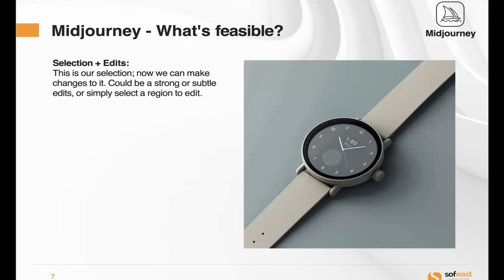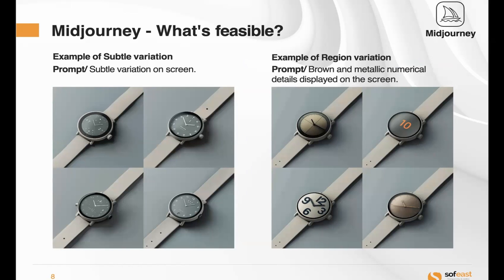We can make either drastic or subtle changes, and we select the region that we want to edit when telling Midjourney. On the left, you see a subtle variation — prompt: 'subtle variation on screen.' The watches are all largely similar with a similar kind of screen but different styles, giving us four different watch face designs to choose from. On the right, you can see a variation in the regions — the prompt was 'brown and metallic numerical details displayed on the screen,' and Midjourney gave us four quite different designs: some look analog, some digital, some have numbers, some just have hands.